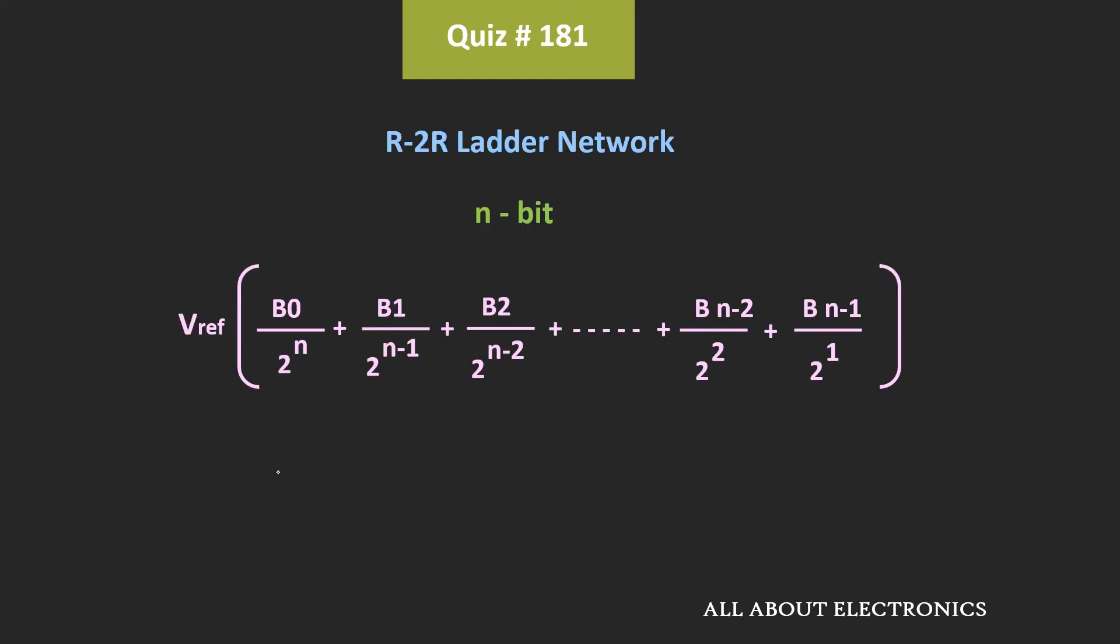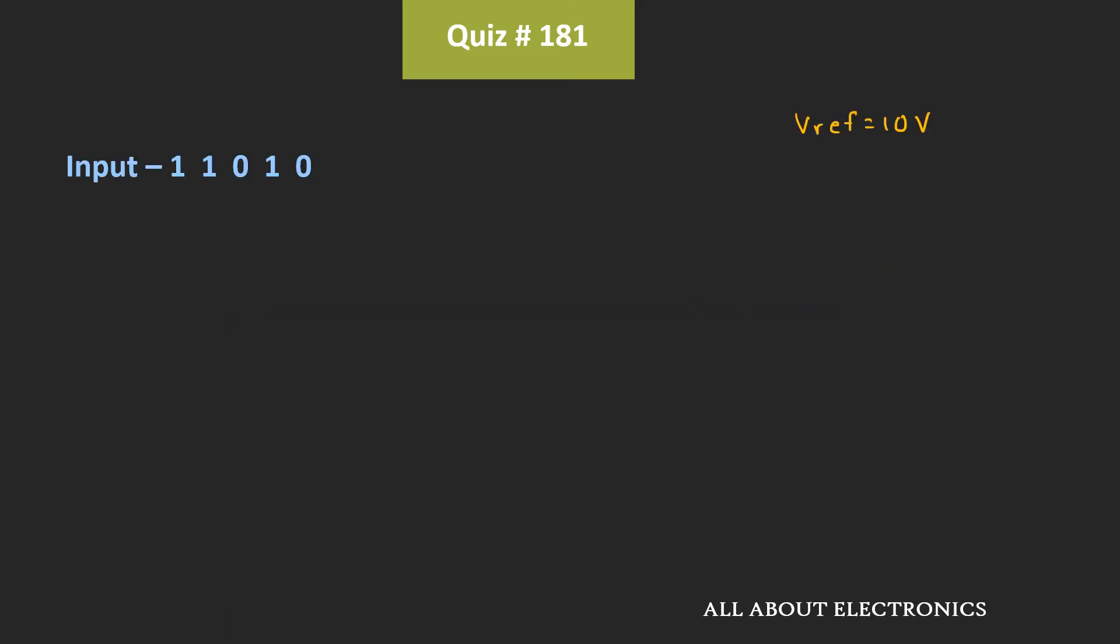And similarly, this is the expression of the output voltage for the n-bit DAC. Now in this case, the input voltage is equal to 11010. So, in this case, for the 5-bit DAC, the output voltage Vout can be given by this expression.